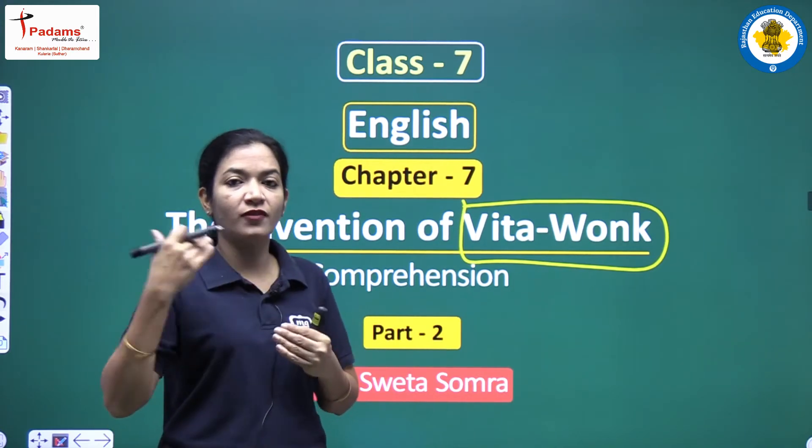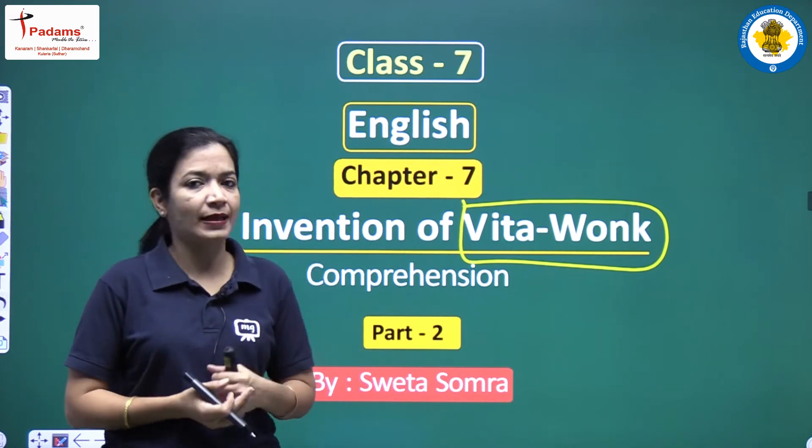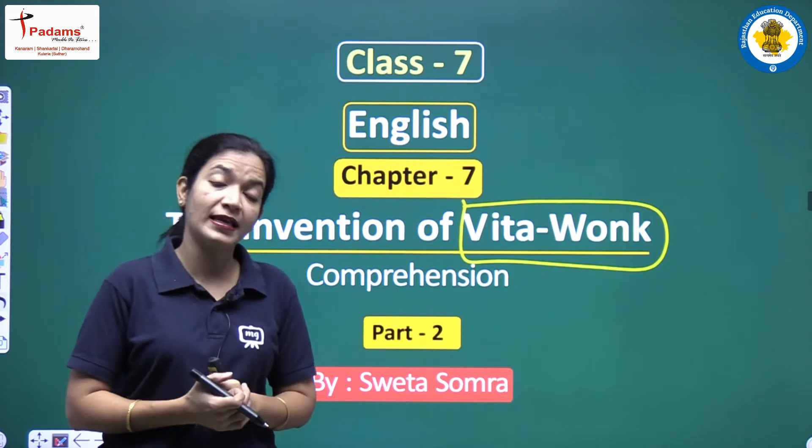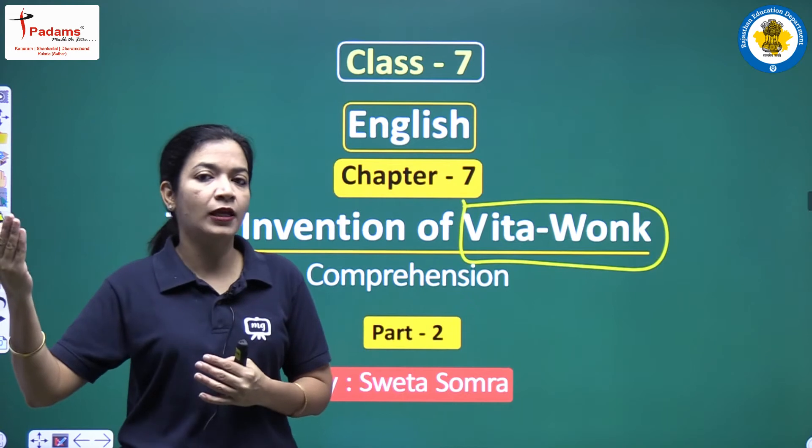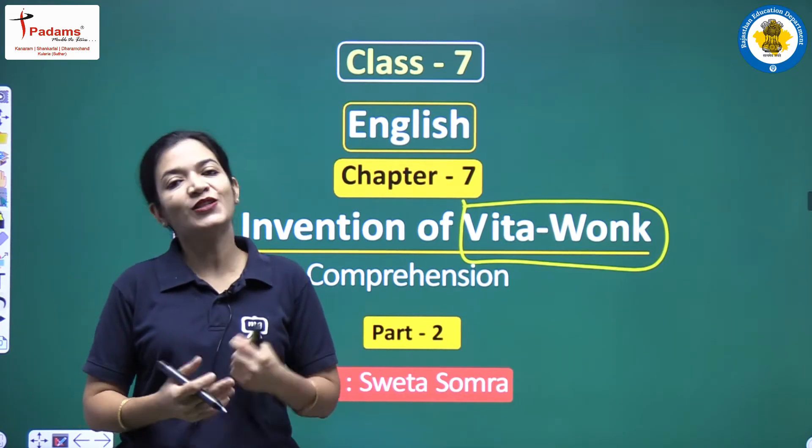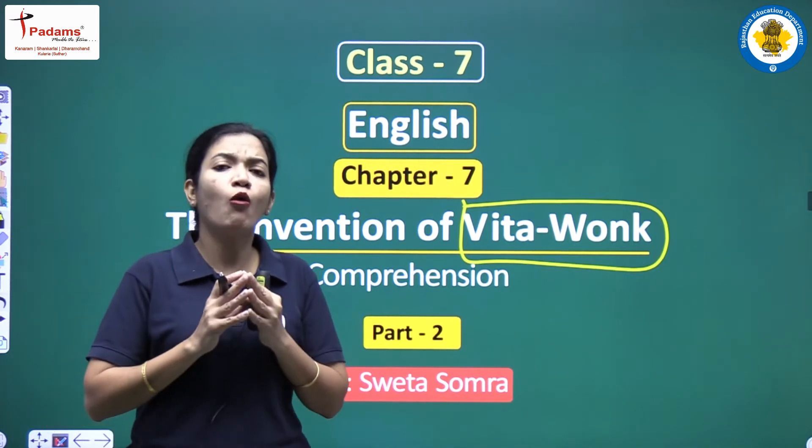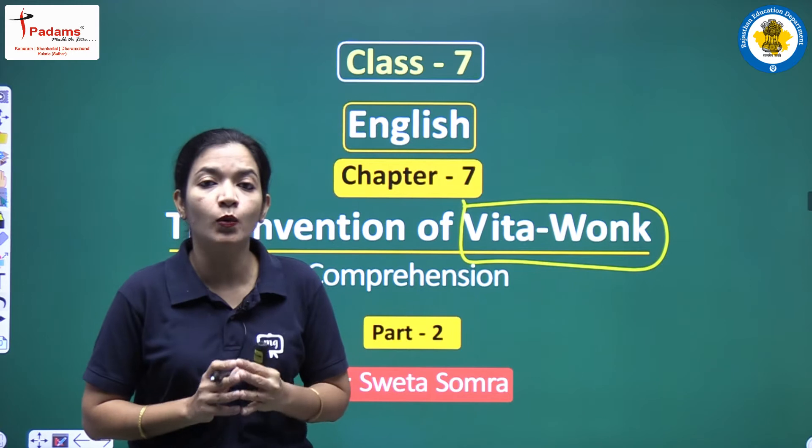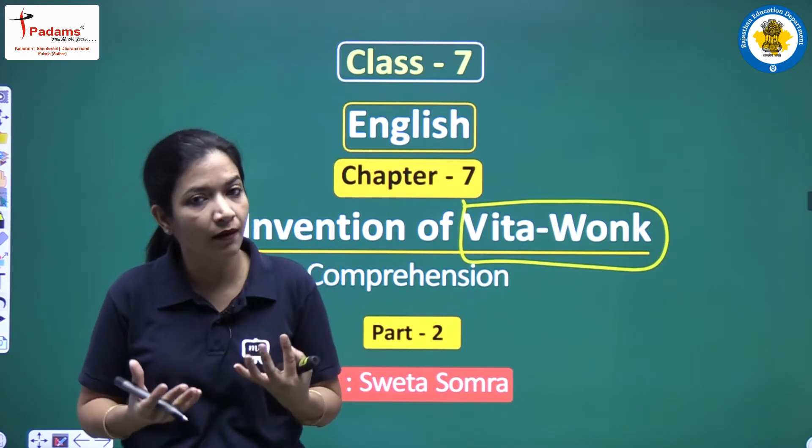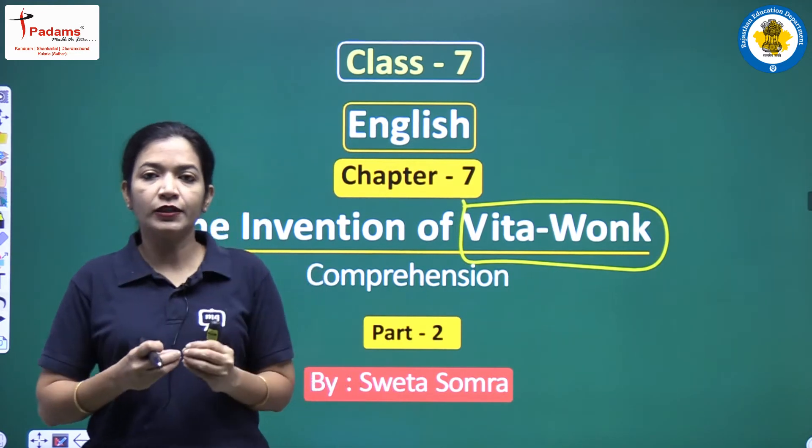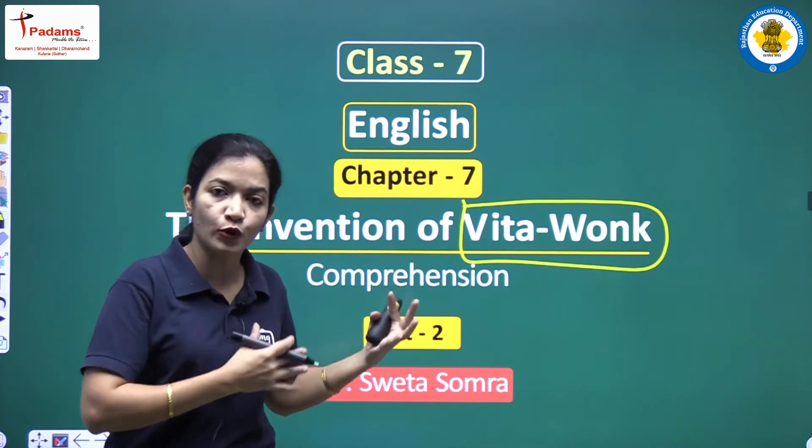So Willie Wonka thought that he should invent something which will increase people's age, make them older. So he tried to collect things from the whole world and he found out the oldest things which were in the world and which were present even before anything came into this earth.